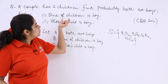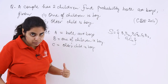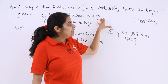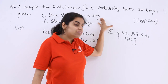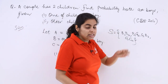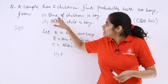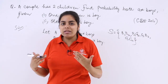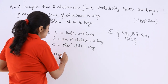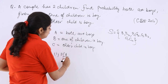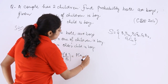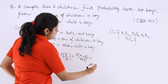For the first part, one of the children is a boy. We have to find the probability that both are boys given that one of the children is a boy. Since this is conditional probability, we compute P(A|B) = P(A intersection B) / P(B).